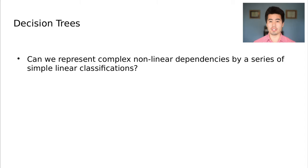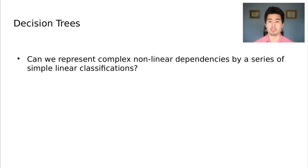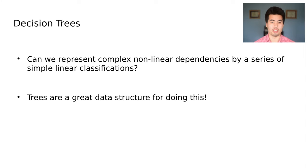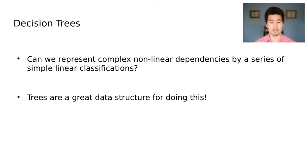A really nice tool to represent these types of problems is decision trees. The idea is: can we find a structure that allows us to make decisions based off of these relationships between variables? For many of you who've taken basic computer science — algorithms and data structures in particular — you know that trees are a great tool for looking at nested dependencies. For those of you who aren't too familiar with trees, don't worry — we'll go through a handful of examples today.